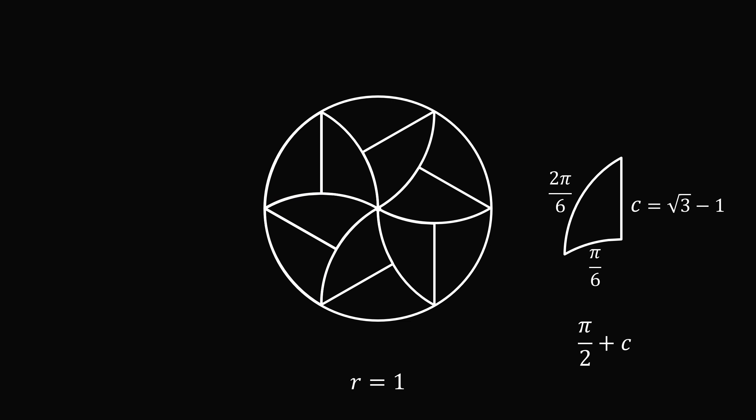This means the perimeter is equal to π over 2 plus the square root of 3 minus 1, and that's approximately equal to 2.303. And that's the answer.